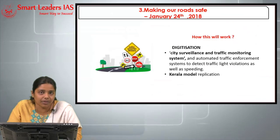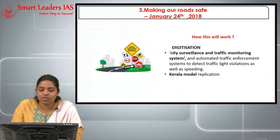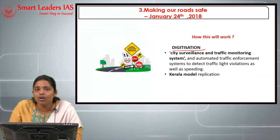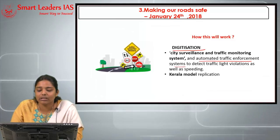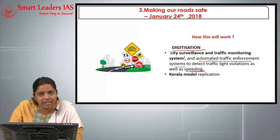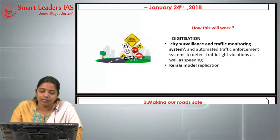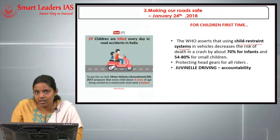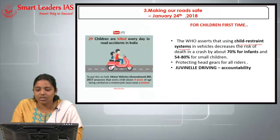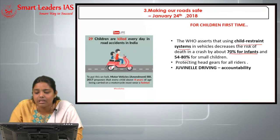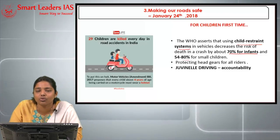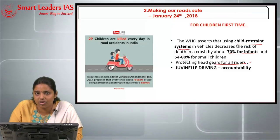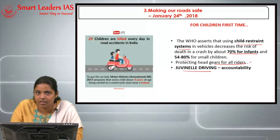The WHO-recommended child restraint system in vehicles will reduce the risk of children's deaths — 70% for infants and 54 to 80% for small children — and will be implemented through the Motor Vehicle Amendment Bill 2017. Protective headgear for all children is also included. The bill addresses accountability for juvenile driving — guardians and parents are held accountable. The bill's key highlight is penalty for behavior: drunk driving attracts ₹10,000 for the first offence and ₹15,000 for subsequent offences; over-speeding ₹1,000 for light motor vehicles and ₹2,000 to ₹4,000 for medium and heavy vehicles; and ₹1,000 fine for not using helmets or seat belts.